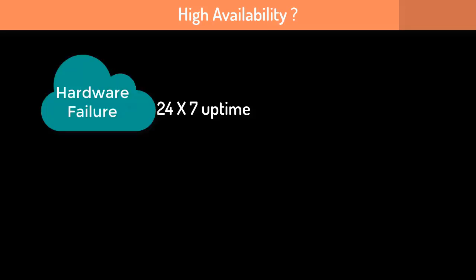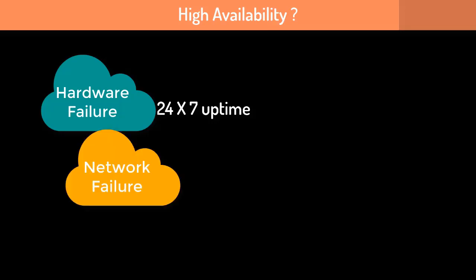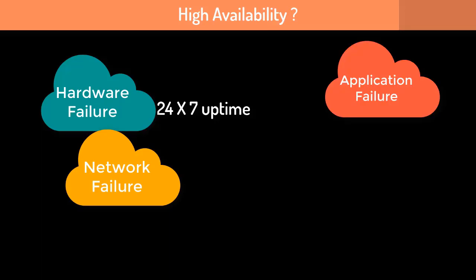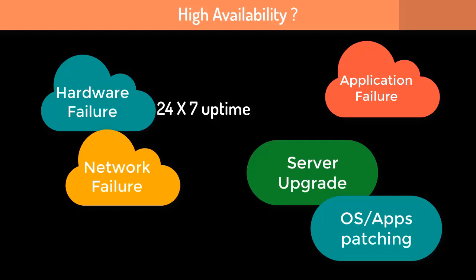You could also be asked: what is high availability and how would you ensure it? As a middleware admin, high availability simply means your application should be available 24/7 under any circumstances — whether hardware fails, part of the network fails, the application crashes, or you need to bring down the server for security patching or upgrades.